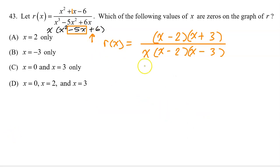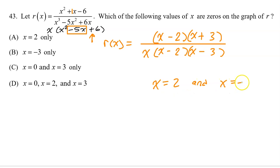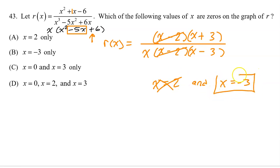Remember, the question was: which of the following values of x are zeros on the graph of R? Zeros come from factors in the numerator that do not cancel out. Do not accidentally say that the zeros will be x equals 2 and x equals negative 3 — that's wrong. Because the x minus 2 cancels out, x equals 2 is a hole and not a zero. It can't be a hole and an x-intercept. So the only zero is at x equals negative 3. That's why the answer is B.